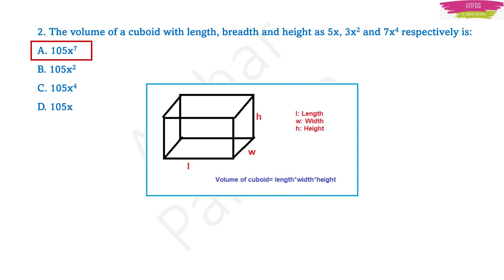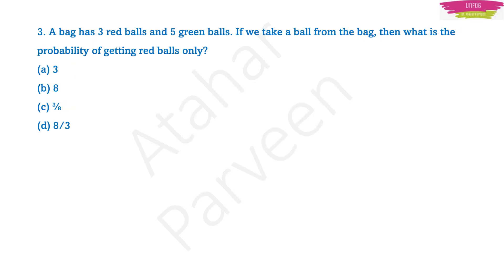Moving on to the next question — this question is from probability. A bag has 3 red balls and 5 green balls. If we take a ball from the bag, then what is the probability of getting red balls only? Try to understand the story in this type of question.